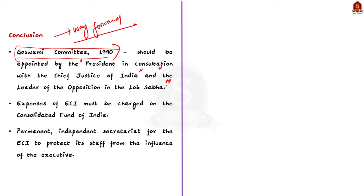Secondly, the expenses of the ECI must be charged on the Consolidated Fund of India, which will give it financial autonomy. Finally, steps must be taken to create a permanent independent secretariat for the Election Commission of India, which will protect its staff from various pressures from the executive. You can also write your own answer and post it in the comment section.